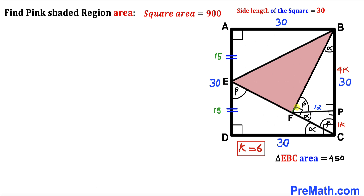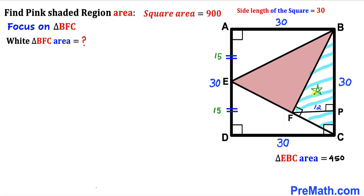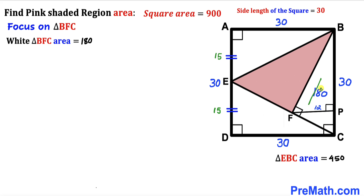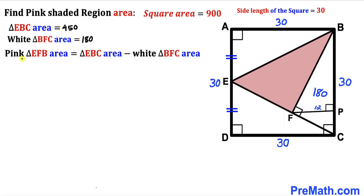Now let's calculate the area of triangle BFC. Using the area of a triangle formula — area equals one-half times base times height — the base of white triangle BFC is 30 and the height is 12. So the area equals one-half times 30 times 12, which simplifies to 180. The area of white triangle BFC turns out to be 180 square units.